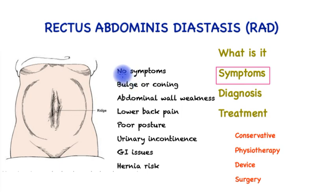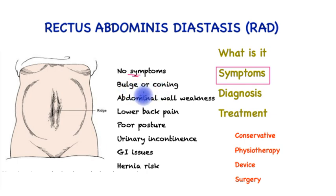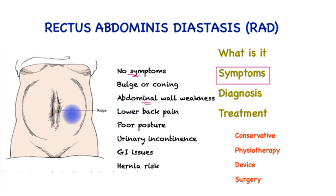The great majority of patients may not have any symptoms at all other than a visible bulge, which can be quite pronounced especially when the patient is trying to get up from a lying down or sitting position. There can be associated abdominal wall weakness not just vertically but also transversely within the core abdominal wall muscles. Lower back pain may also be present and may cause poor posture.